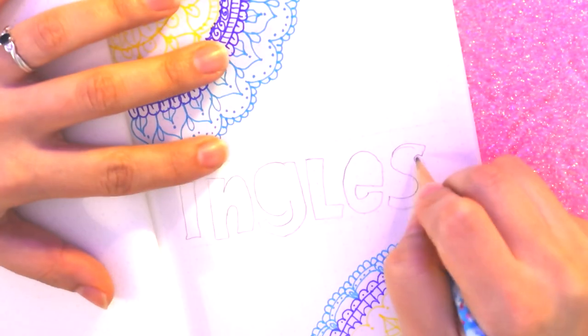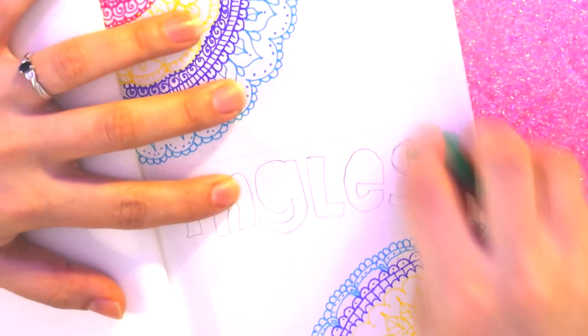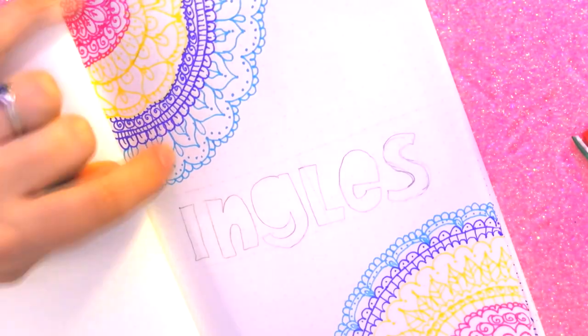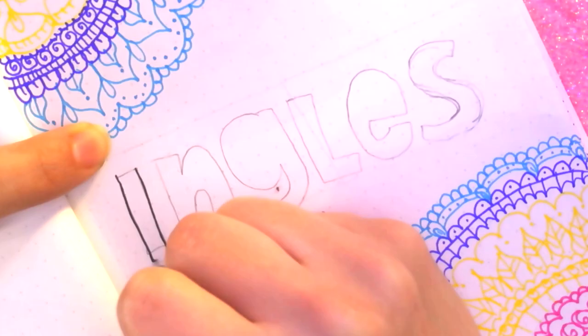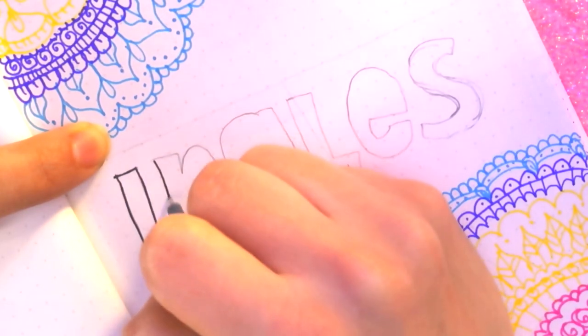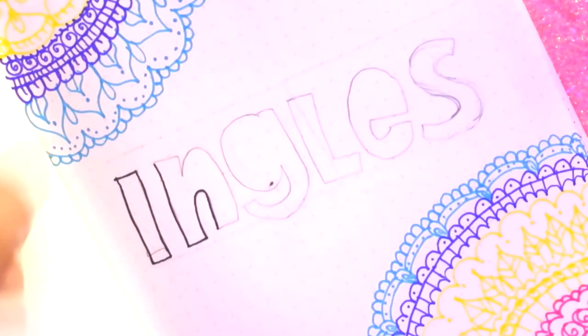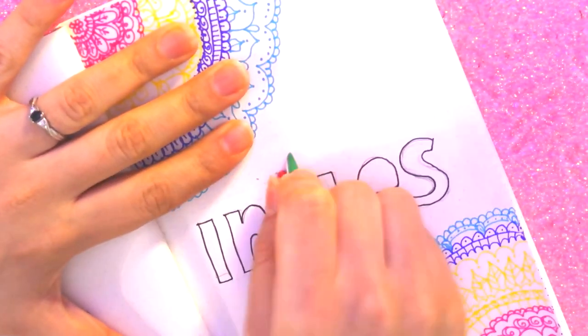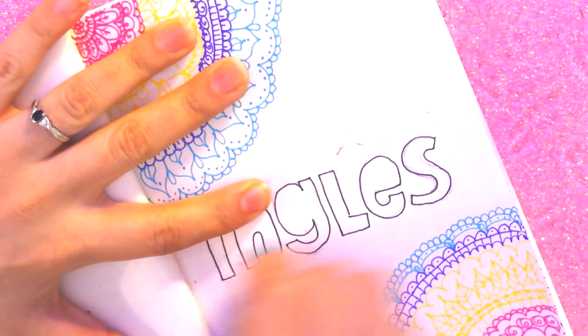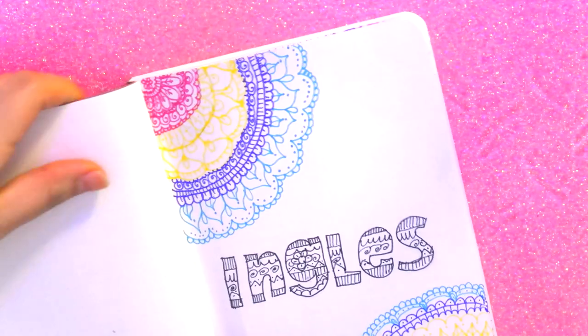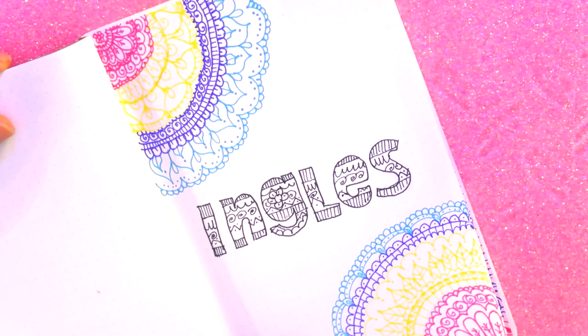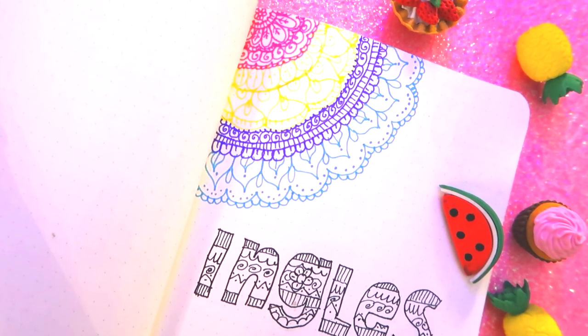As you see here in the S, sometimes I make a lot of mistakes, so what I do is erase it. Now I'm going to trace over with my pen all my letters. Then I'm going to erase those lines. I only put these so that they would be straight. And if you want to know how to make these letters, stay until the end of the video to show you how to make the alphabet with this type of decorations.